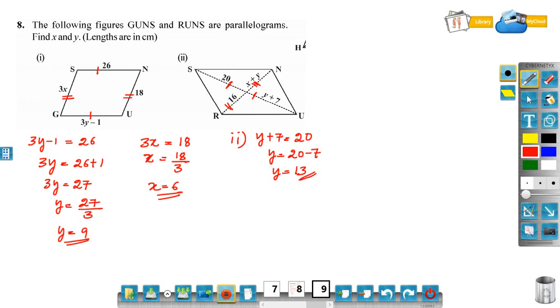And parts of diagonal x plus y is equal to 16. We got the value of y, that is 13, so x plus 13 is equal to 16. X is equal to 16 minus 13, that is 3.